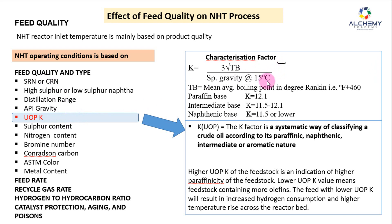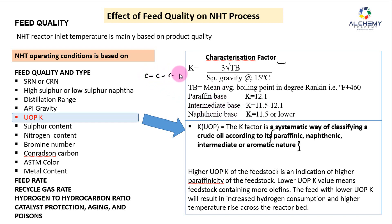Now, the UOPK characterization factor. The K factor is a systematic way of classifying crude oil according to its paraffinic, naphthenic, intermediate, or aromatic nature — essentially telling us the nature of the hydrocarbon feed being processed in the naphtha hydrotreating unit. K = (∛Tb) / SG at 15°C, where Tb is the mean average boiling point in degrees Rankine (°F + 460). For paraffinic base, K = 12.1; intermediate base, K is between 11.5 and 12.1; naphthenic base, K = 11.5 or lower.